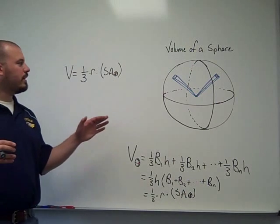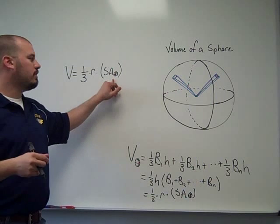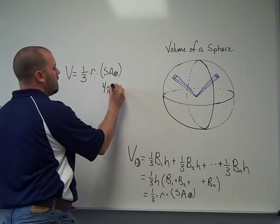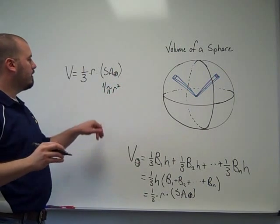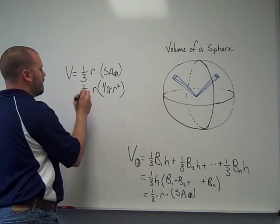In a previous video, I showed how you come up with the surface area, or one explanation for the surface area of the sphere. If you recall, that is four pi r squared. So the surface area of the sphere, four pi r squared, times one-third, times the radius.